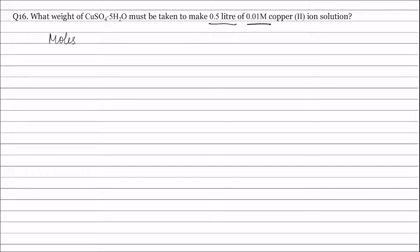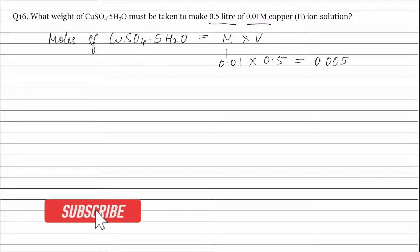Therefore, moles of CuSO4·5H2O equals molarity times volume. Molarity is 0.01 and volume is 0.5 litre. Therefore, molarity times volume equals 0.005 moles of copper sulphate pentahydrate.